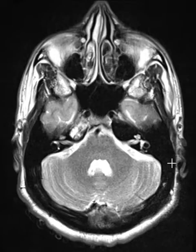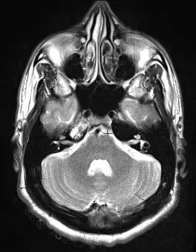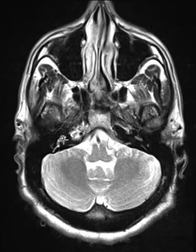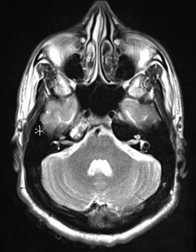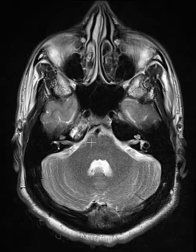This is called the petrous portion of the temporal bone, and this is called the mastoid portion of the temporal bone out here. The mastoid portion is almost always pneumatized, meaning it's filled with air cells. The petrous portion is sometimes filled with air, sometimes filled with marrow. When it's filled with air like here, this is a pneumatized petrous portion of the temporal bone. Now if we look on the opposite side, we see there is asymmetry.